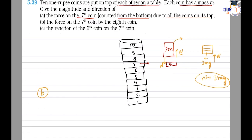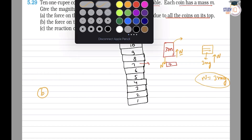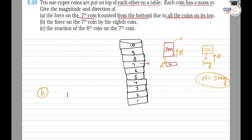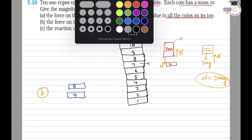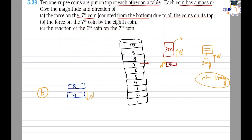Now coming to Part B: the force on the seventh coin by the eighth coin. In this, we deal with the seventh coin and the eighth coin. The force exerted by the eighth coin on the seventh coin is normal N. By the action-reaction pair, the seventh coin will also exert a force N on the eighth coin in the upward direction. To find the value of N, we use the FBD of the eighth coin.